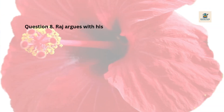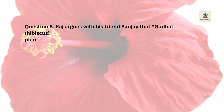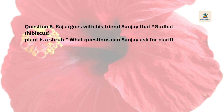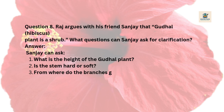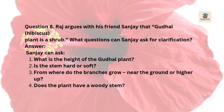Question 8: Raj argues with his friend Sanjay that gudal hibiscus plant is a shrub. What questions can Sanjay ask for clarification? Answer: Sanjay can ask — 1. What is the height of the gudal plant? 2. Is the stem hard or soft? 3. From where do the branches grow — near the ground or higher up? 4. Does the plant have a woody stem?